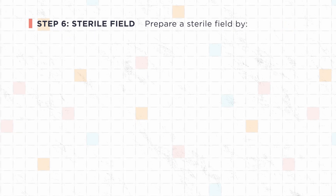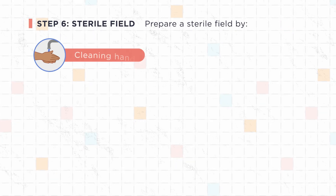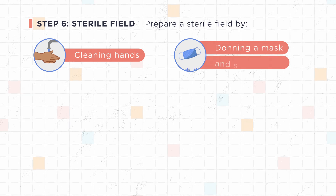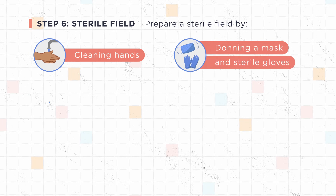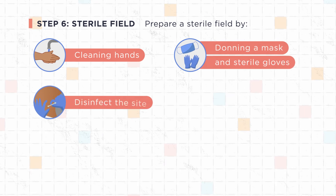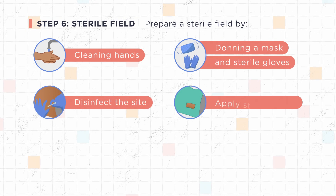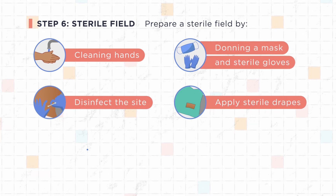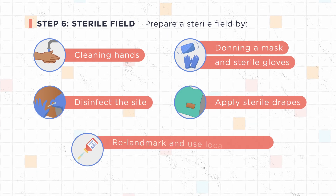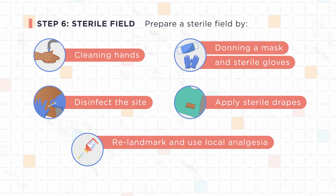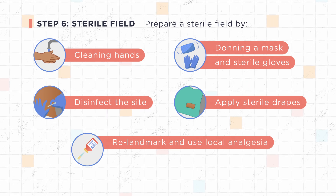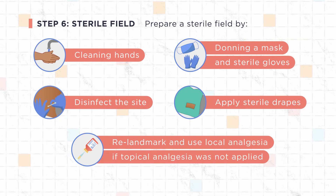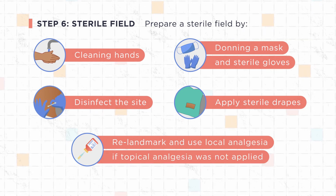Step 6: Sterile field. Prepare a sterile field by cleaning hands, donning a mask, and sterile gloves. Disinfect the site and then apply sterile drapes. Re-landmark and use local analgesia if topical analgesia was not applied.